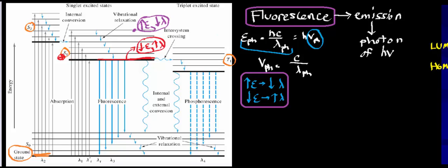Here's what can happen in a general case of fluorescence. You start with electrons in the ground state, expose the molecule to photons of light, and it absorbs a photon. Let's say it absorbs a photon with an energy greater than the minimum energy needed to produce fluorescence, raising the molecule to a higher energy level within S1.